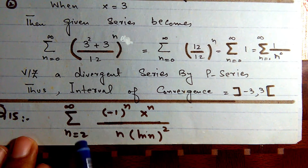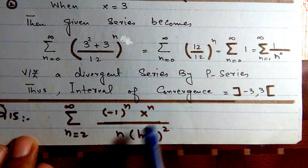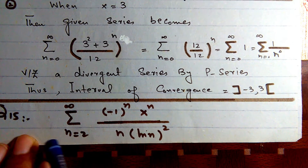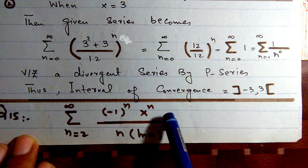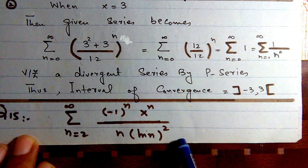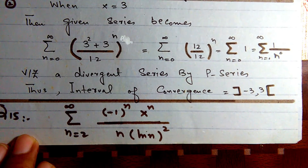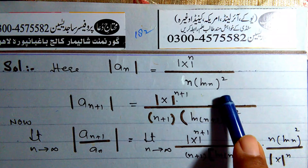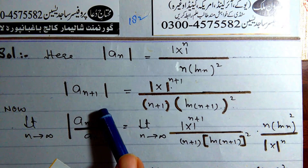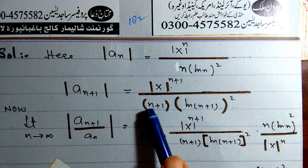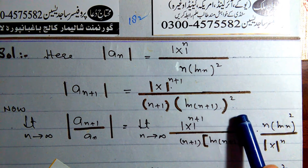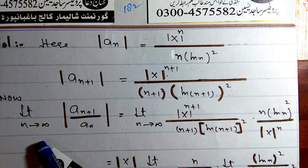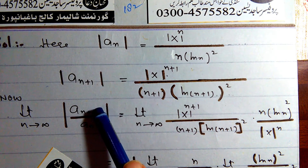Question 15: Summation of (-1)^n · x^n / (n · ln n). The absolute value is |x|^n / (n · ln n). We apply the ratio test: limit as n→∞ of |a_(n+1)/a_n|, which gives |x| · limit of [n · ln n] / [(n+1) · ln(n+1)].